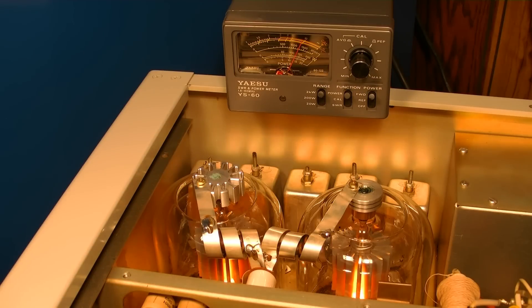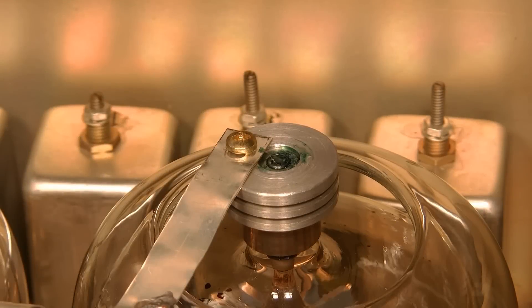We're going to raise the power on up to 1250 watts out and as you can see the temperature indicating crayon on the tube on the left hand side is beginning to melt. And that's the end of the test.